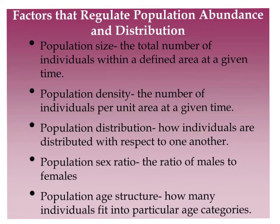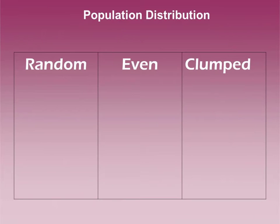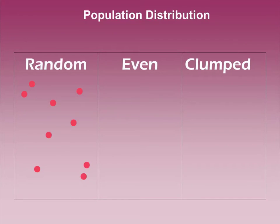Getting back to our original slide, I next want to talk about population distribution, which refers to how individuals are distributed or spread out. There are three types: random, even, and clumped. Random distribution means there's no real reason why individuals are where they are. This is quite common in plants — much like trees in a forest, they're not evenly planted; they grow wherever their seeds may fall.